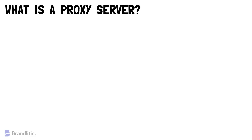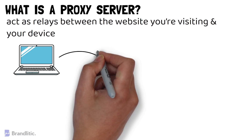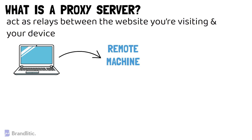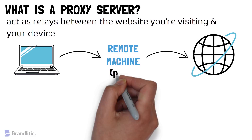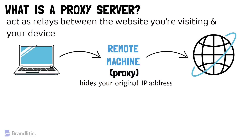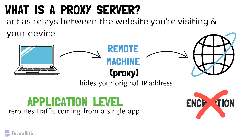First, let's understand what is a proxy server. A proxy server acts as a relay between the website you are visiting and your device. Your traffic goes through a middleman, which is a remote machine used to connect you to the host server, and the proxy server hides your original IP address so that the website sees the IP of the proxy. However, proxies only work on the application level, meaning it only reroutes the traffic coming from a single application you set your proxy up with, and also they don't encrypt your traffic, meaning all your data is highly vulnerable while you are using a proxy.